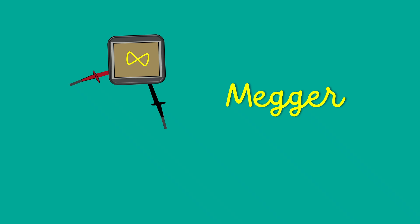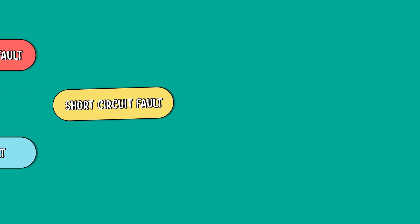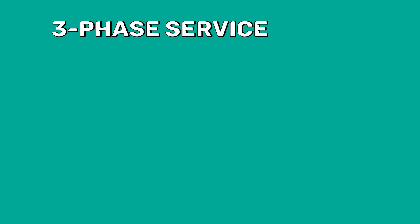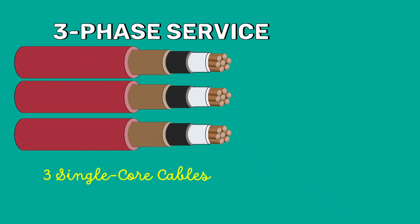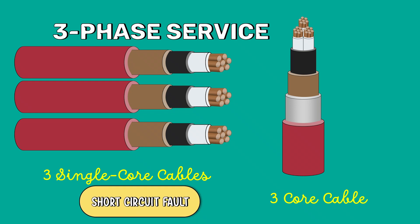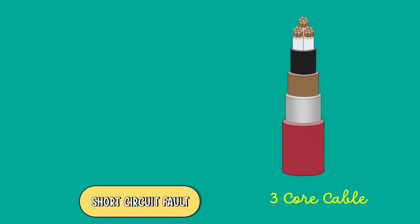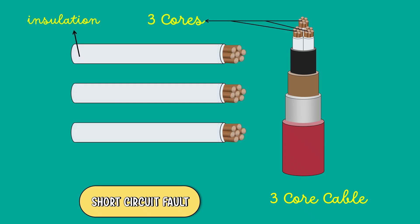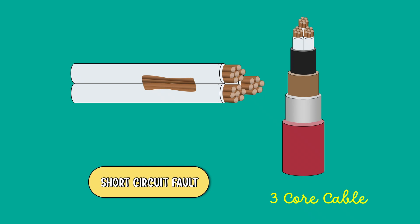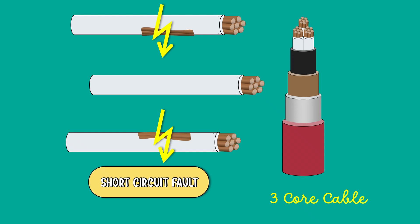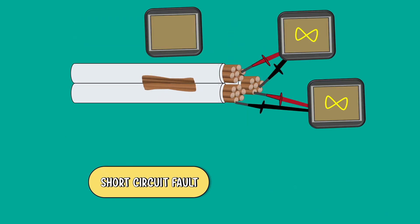Now let's move on to short circuit faults. For a three-phase service, either three single-core cables or three-core cables can be used. This short circuit fault mainly occurs in three-core cables, where the three cores are separately insulated. If insulation failure occurs, these conductors will come in electrical contact with each other — this is the short circuit fault. To find which two conductors are short-circuited, we measure the resistance between the conductors. If the Megger gives a zero reading, it indicates a short circuit fault between those conductors.